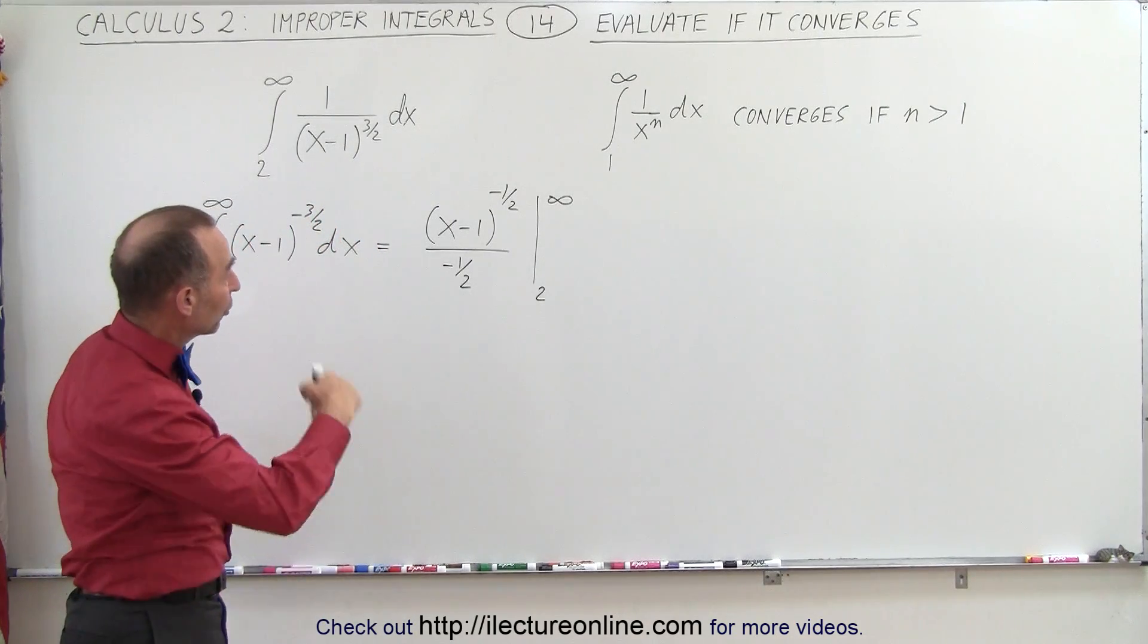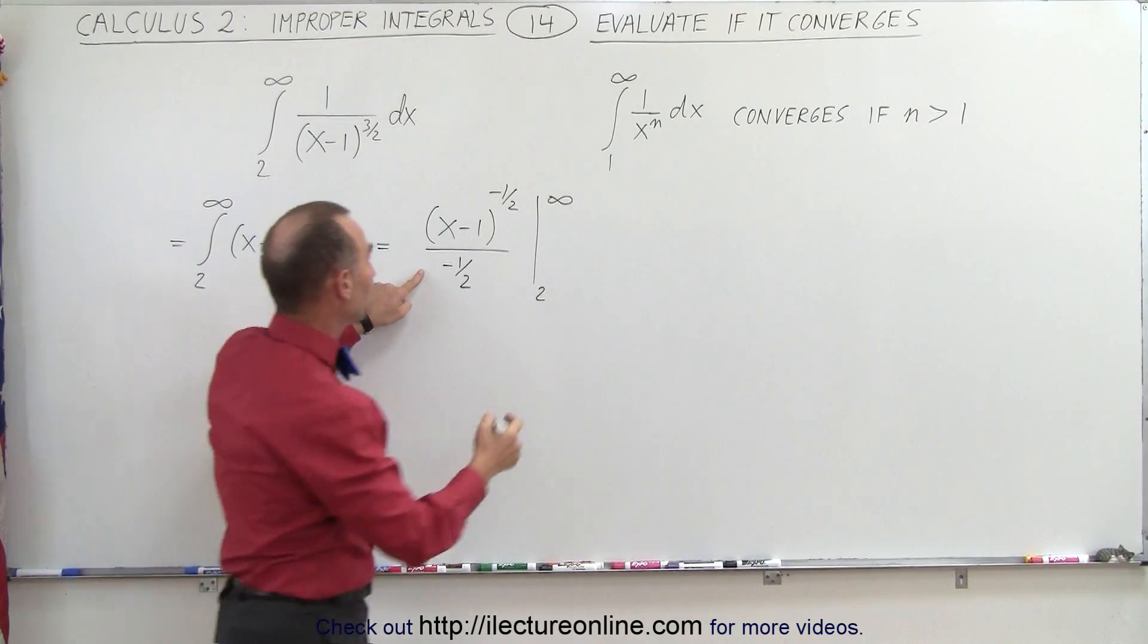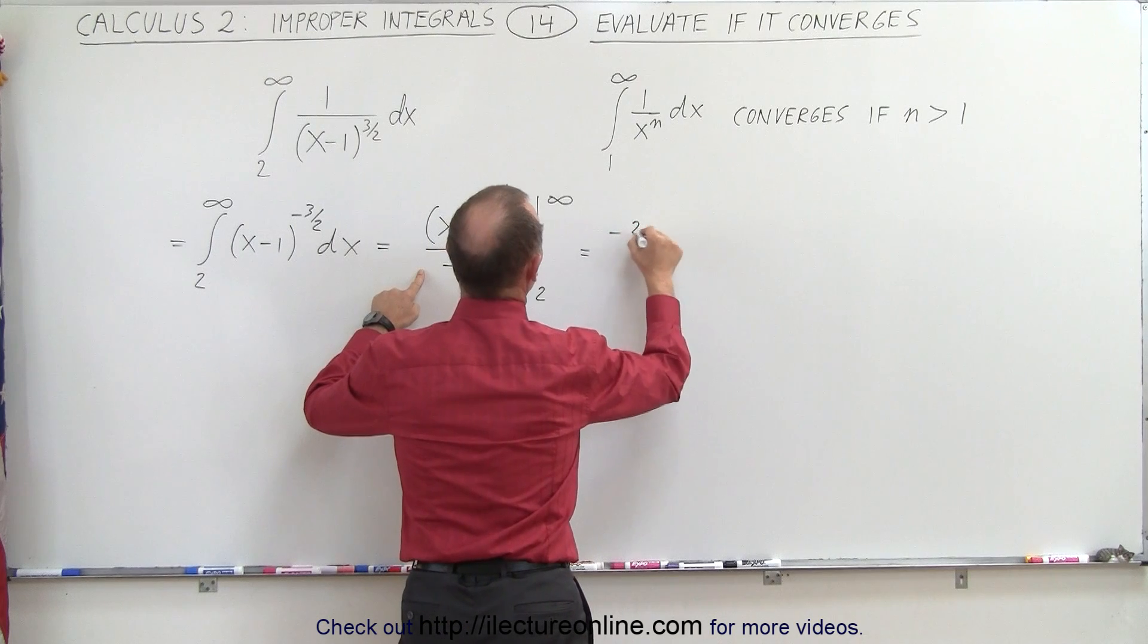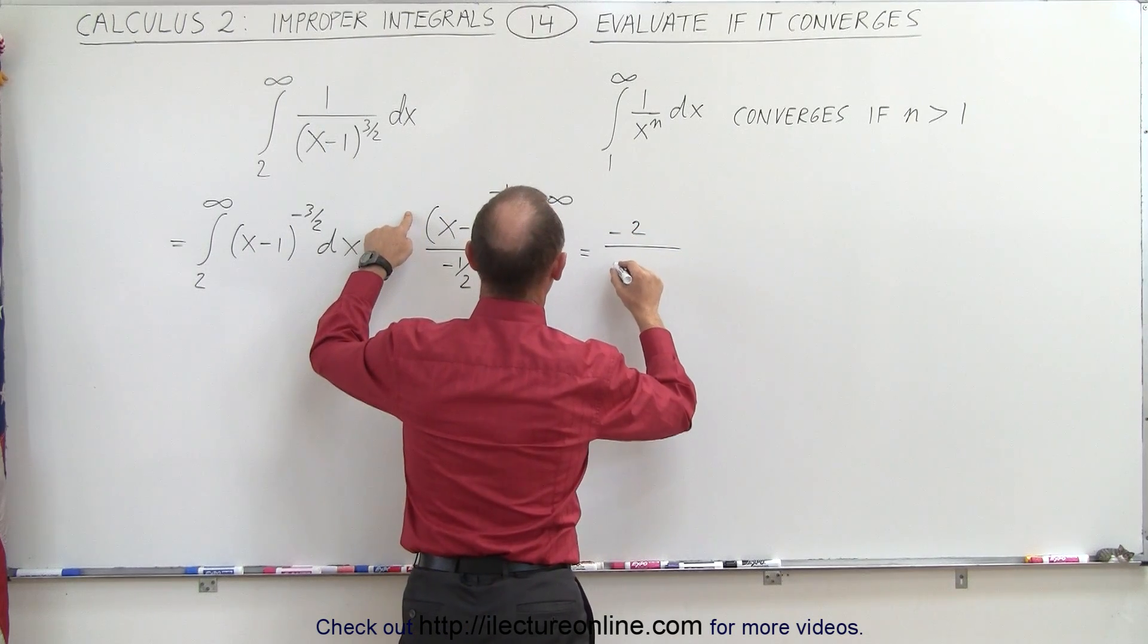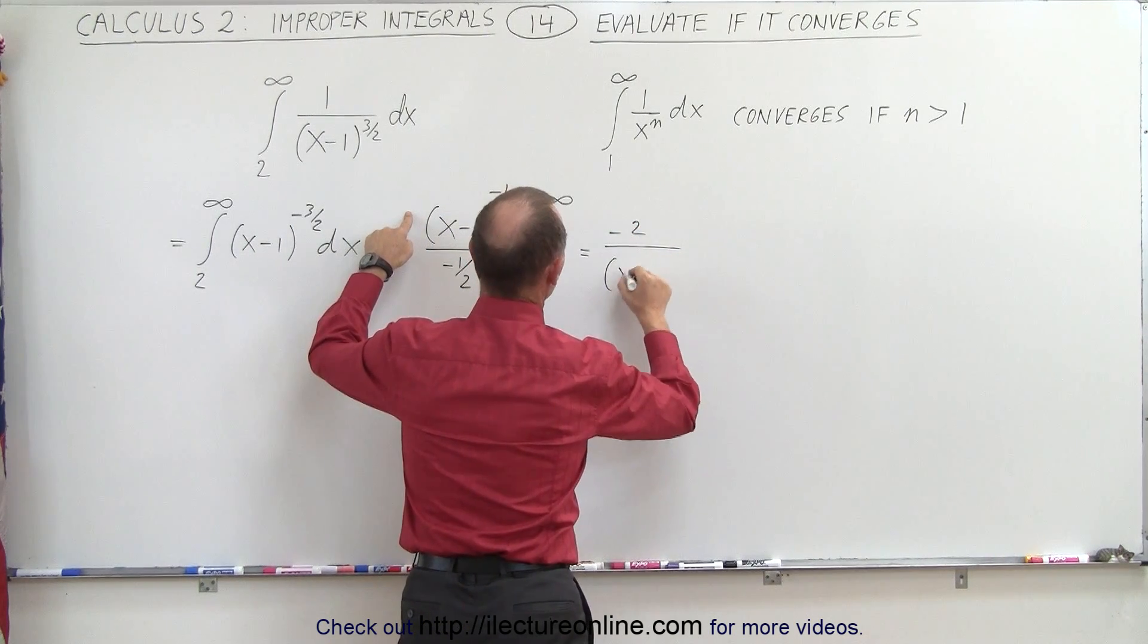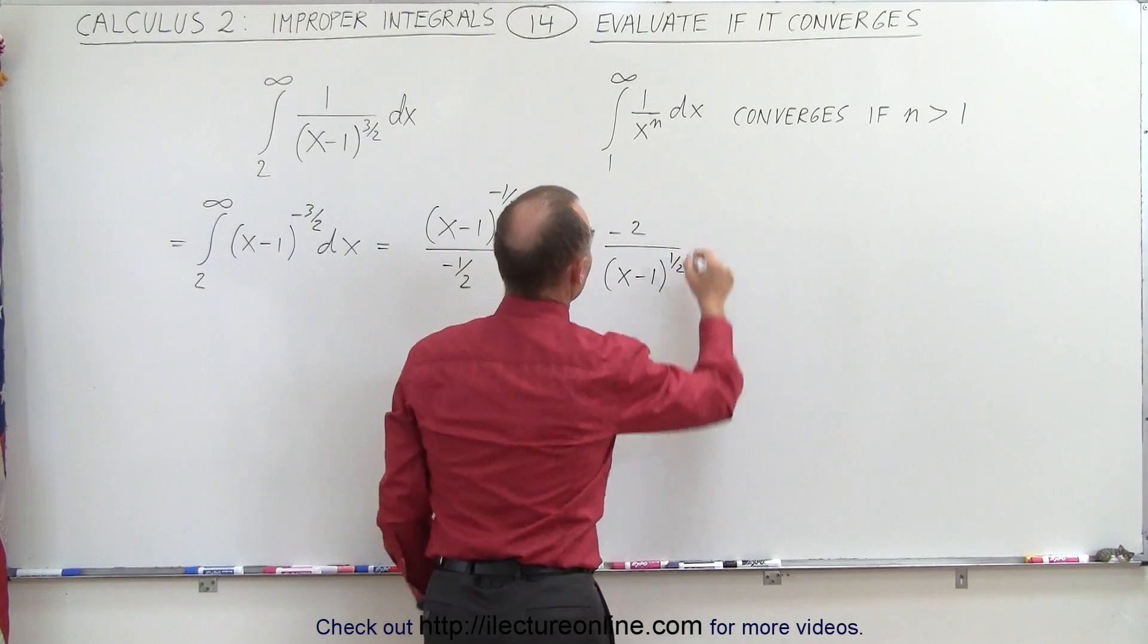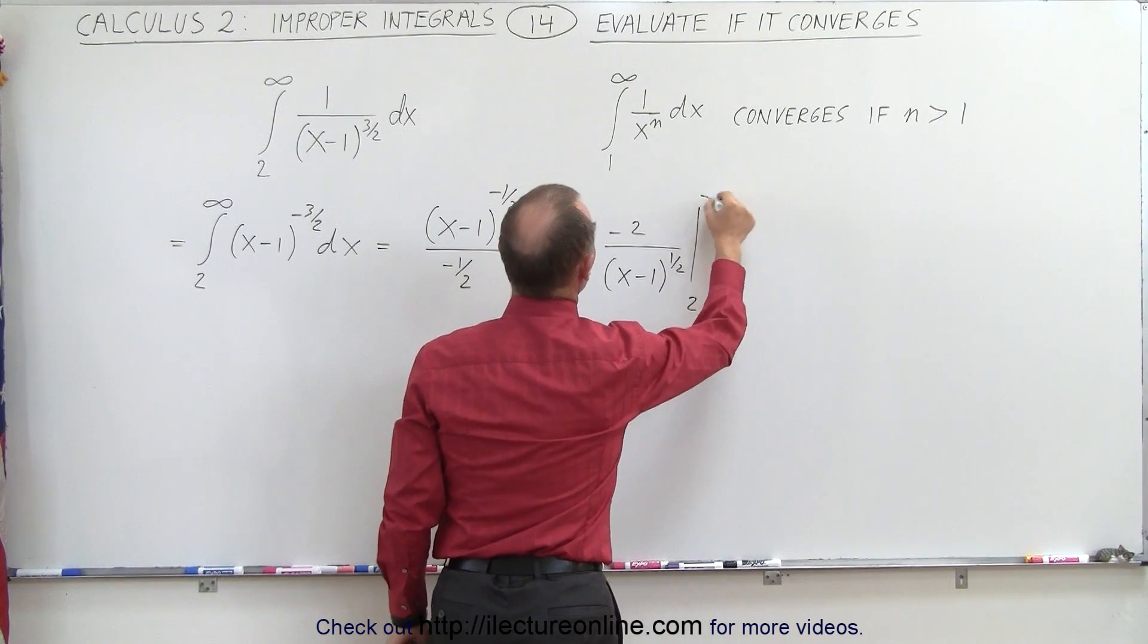Simplifying this a little bit, we'll put the 2 in the numerator, put the negative in front of that. So this is equal to minus 2 divided by the square root of x minus 1 in the denominator. And now we can evaluate it from 2 to infinity.